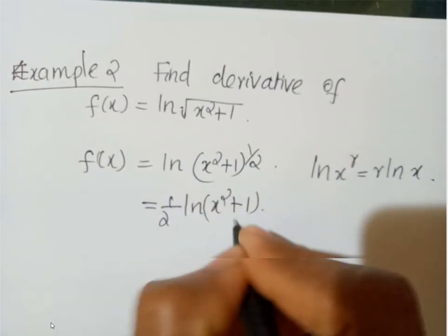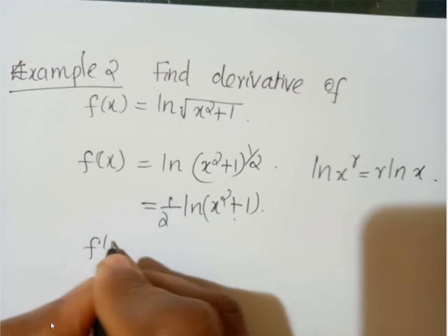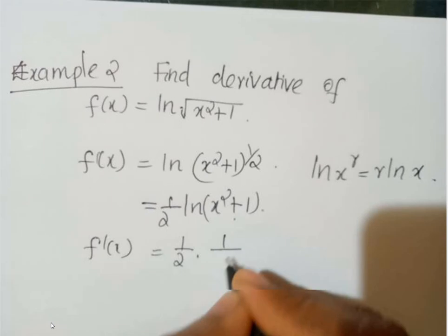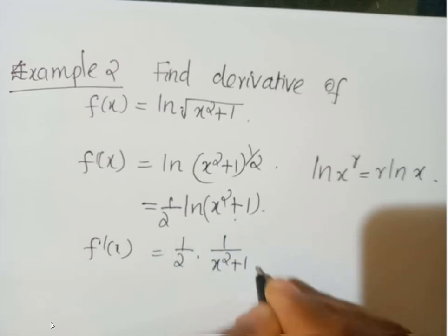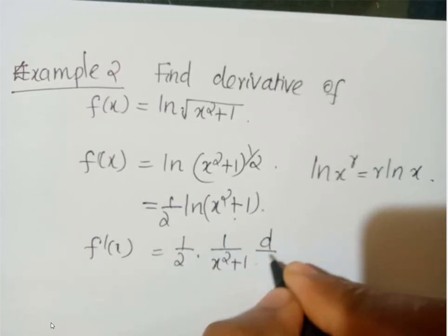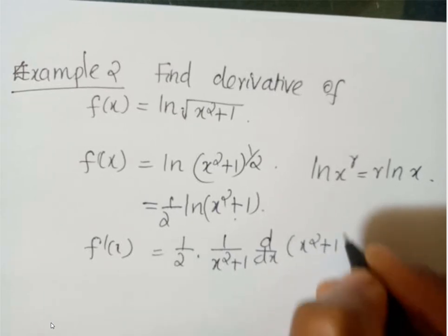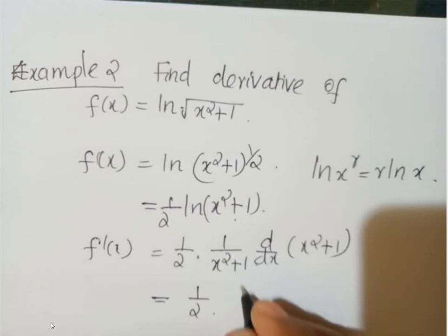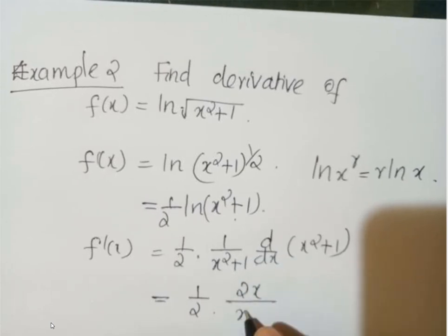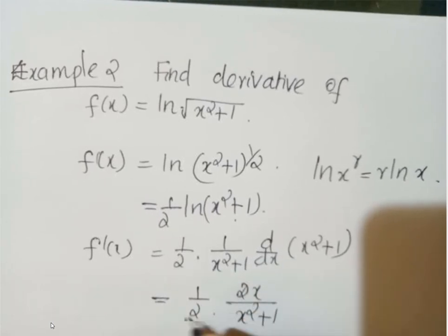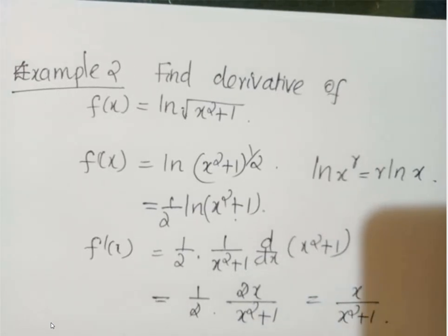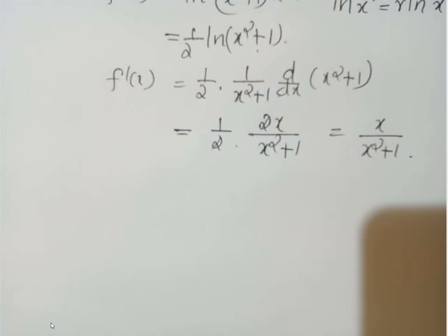Applying the derivative: f'(x) = 1/2 · 1/(x² + 1) · d/dx of (x² + 1), which equals 1/2 · 2x/(x² + 1). The 2 cancels, giving x/(x² + 1).